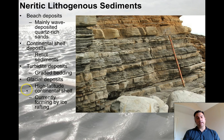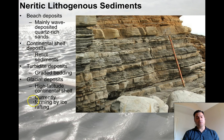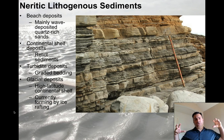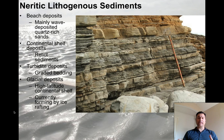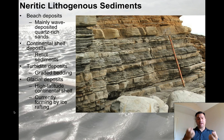Glacial deposits occur on the high-latitude continental shelf — you have to be in a cold area for this. They are currently formed by ice rafting: glaciers go out, and when they reach the ocean they melt, and rock fragments picked up along the way melt out and fall to the bottom of the ocean. That's called ice rafting.